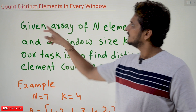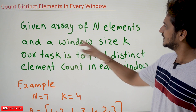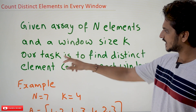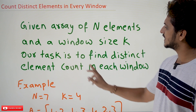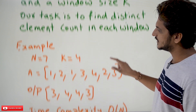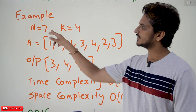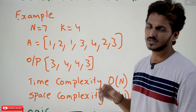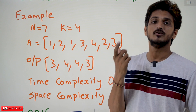Coming to today's class, given an array of n elements and a window size k, our task is to find distinct element count in each window. Let us try to understand with an example: n is equal to 7 means 7 elements, k is equal to 4 means window size is of size 4.